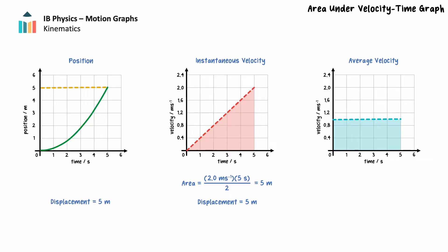What if instead of examining the instantaneous velocity as a function of time, we examined a graph that assumes the object moved at a constant velocity equal to the average velocity during the time interval? The average velocity during the first 5 seconds of motion is 1 meter per second, so the area bounded by the graph and the time axis is 5 meters. Again, the displacement calculated from the average velocity is the same as the displacement read from the position-time graph and as the displacement calculated from the instantaneous velocity-time graph.